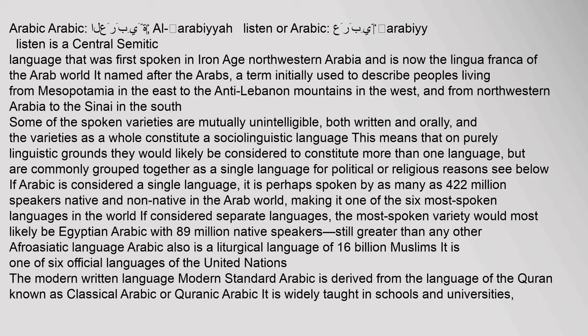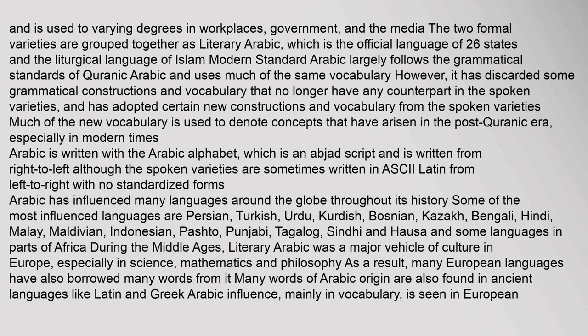Arabic, Al-Arabiya, is used to varying degrees in workplaces, government, and the media. The two formal varieties are grouped together as Literary Arabic, which is the official language of 26 states and the liturgical language of Islam. Modern Standard Arabic largely follows the grammatical standards of Quranic Arabic and uses much of the same vocabulary. However, it has discarded some grammatical constructions and vocabulary that no longer have any counterpart in the spoken varieties, and has adopted certain new constructions and vocabulary from the spoken varieties. Much of the new vocabulary is used to denote concepts that have arisen in the post-Quranic era.